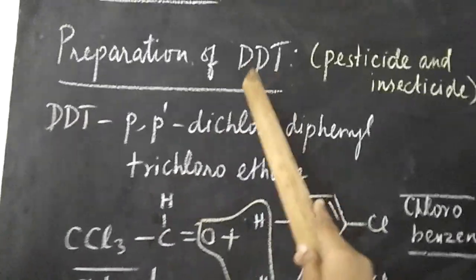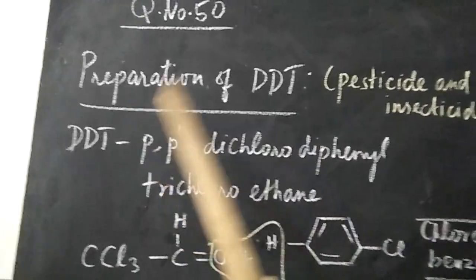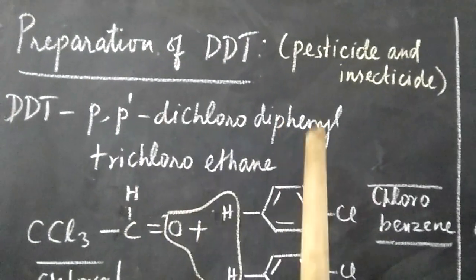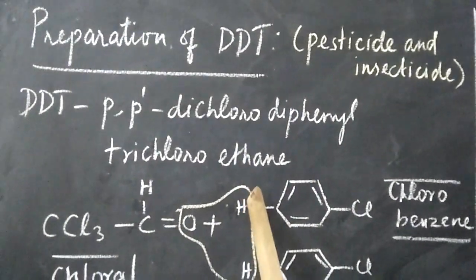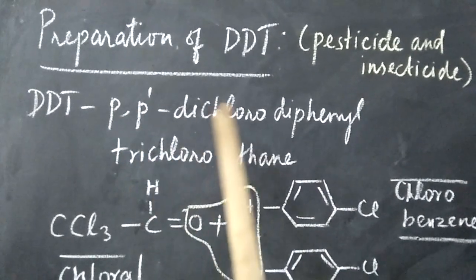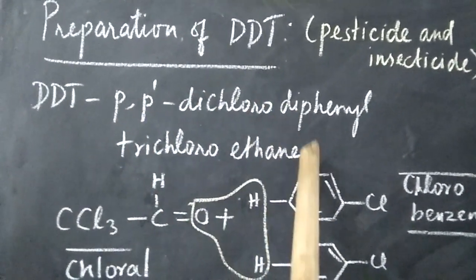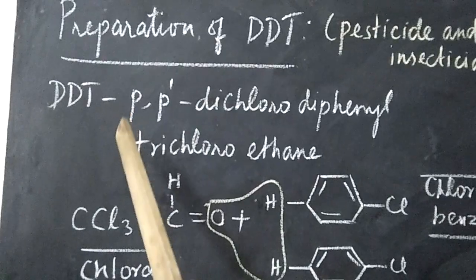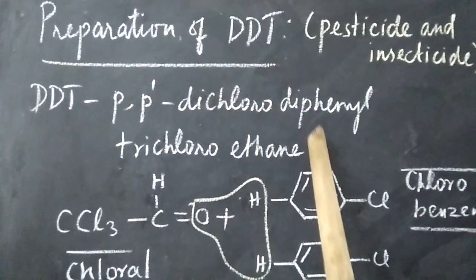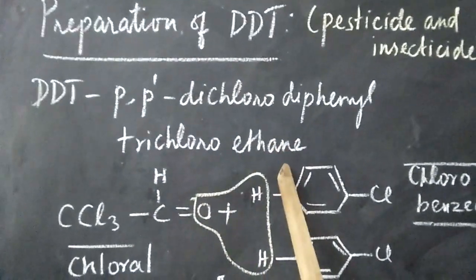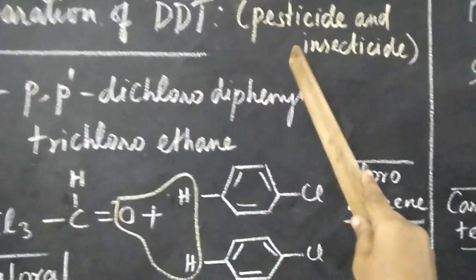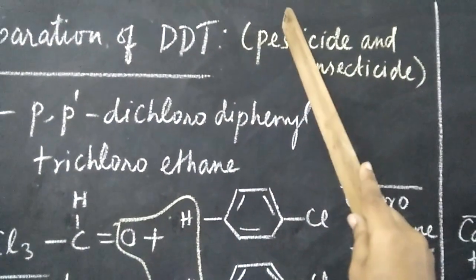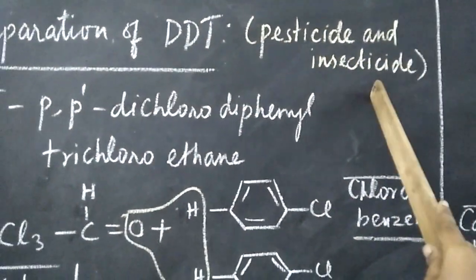The first compound is DDT. DDT is dichloro-diphenyl-trichloro-ethane. These groups will be attached in the para-position of the phenyl group, so it is called PP-dichloro-diphenyl-trichloro-ethane. The main important use is it is used as pesticide and insecticide.